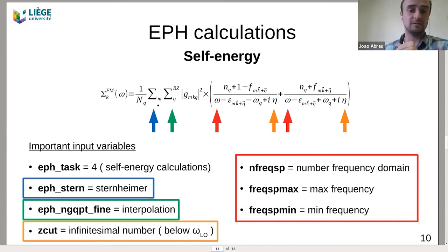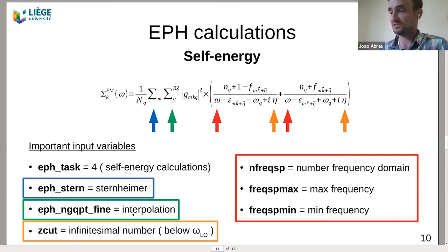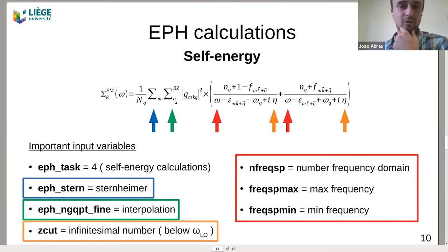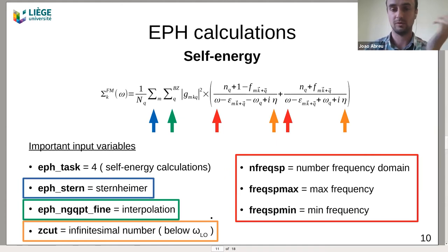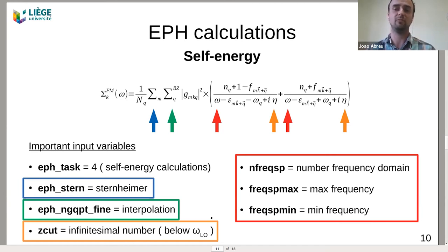We add these parameters to the self-energy and use EPH task 4 to calculate it. We use the Sternheimer equations to avoid using too many empty bands. We use the interpolation scheme by Guillaume to increase the Q-mesh so we don't need to calculate a large number of phonons explicitly. The Z-cut is chosen to avoid singularities in the denominator; it should be below the phonon frequency that creates the polaron but not so low as to cause numerical instabilities.